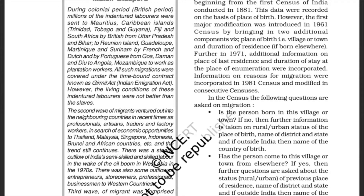Indian Diaspora: During the colonial British period, millions of indentured laborers were sent to Mauritius, Caribbean islands, Trinidad, Tobago, and Guiana, Fiji, and South Africa by the British from Uttar Pradesh and Bihar; to Reunion island, Guadeloupe, and Martinique, and Suriname by the French and Dutch; and by the Portuguese from Goa, Daman and Diu to Angola and Mozambique, to work as plantation workers. All such migrations were covered under the time-bound contract known as the Girmit Act, or Indian Immigration Act. However, the living conditions of these indentured laborers were not better than those of slaves.